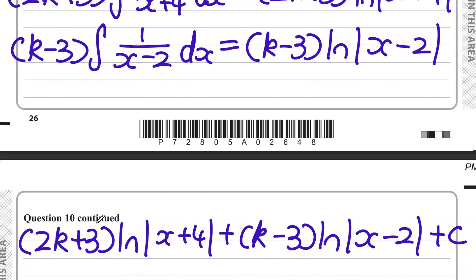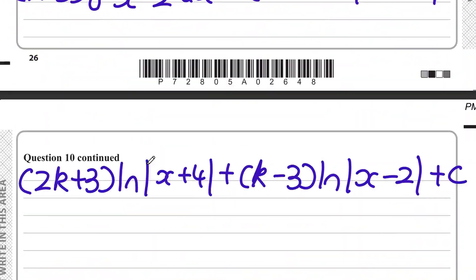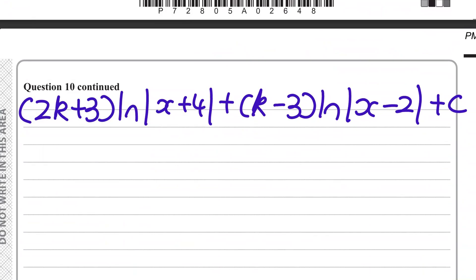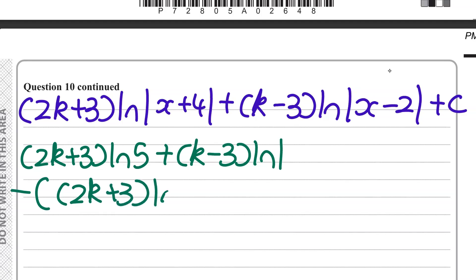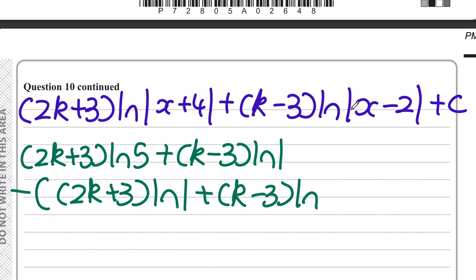Now substituting in the limits 1 and −3. At x = 1: (2k + 3) ln|1 + 4| + (k − 3) ln|1 − 2| = (2k + 3) ln 5 + (k − 3) ln|−1| = (2k + 3) ln 5 + (k − 3) ln 1. At x = −3: (2k + 3) ln|−3 + 4| + (k − 3) ln|−3 − 2| = (2k + 3) ln 1 + (k − 3) ln 5. Setting the difference equal to 21.